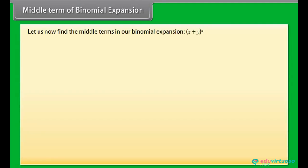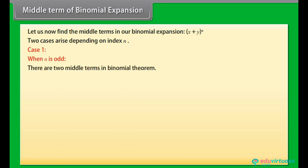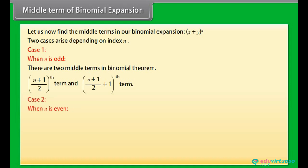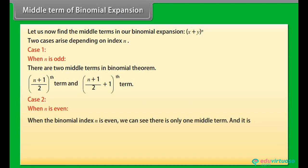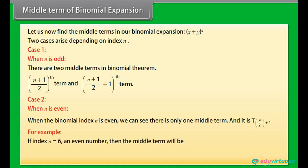Let us now find the middle terms in binomial expansion (x + y)ⁿ. Two cases arise depending on index n. Case 1: when n is odd, there are 2 middle terms — the ((n+1)/2)th term and the ((n+1)/2 + 1)th term. Case 2: when n is even, there is only one middle term, which is t(n/2 + 1). For example, if n = 6 (even), the middle term is t(6/2 + 1) = t₄.